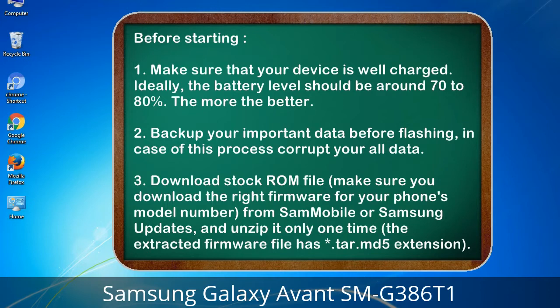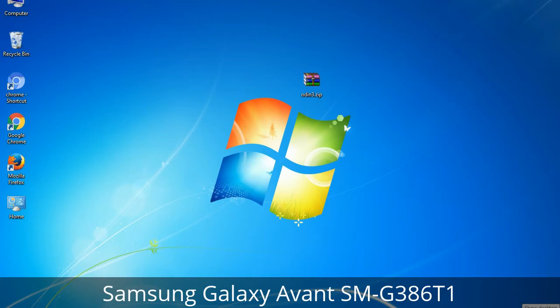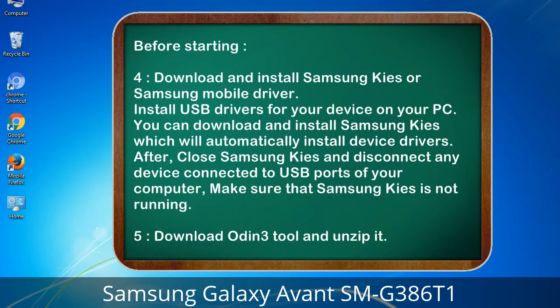3. Download the stock ROM file. Make sure you download the right firmware for your phone's model number from Sammobile or Samsung Updates, and unzip it only one time. The extracted firmware file has a *.tar.md5 extension. 4. Download and install Samsung KIES or Samsung mobile driver to install USB drivers for your device on your PC. You can download Samsung KIES which will automatically install device drivers. After, close Samsung KIES and disconnect any device connected to USB ports. Make sure Samsung KIES is not running.